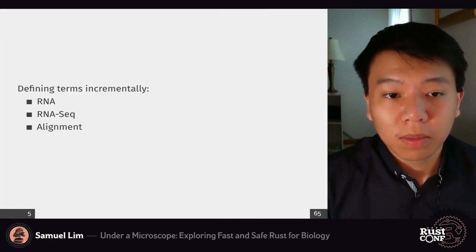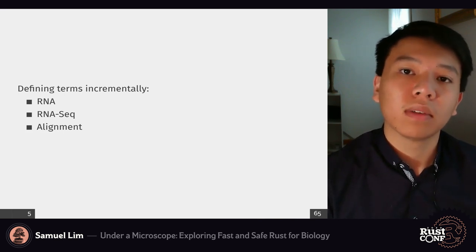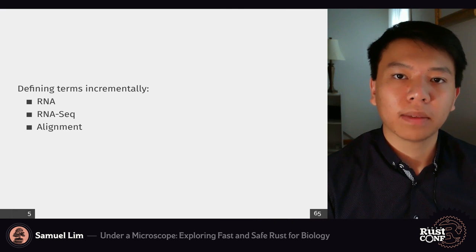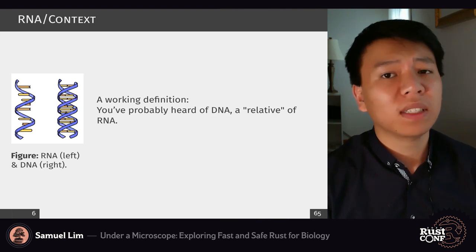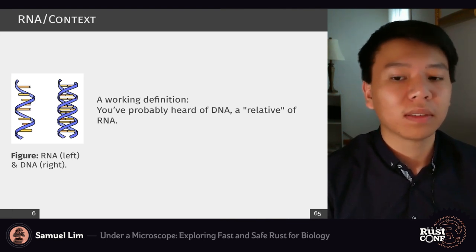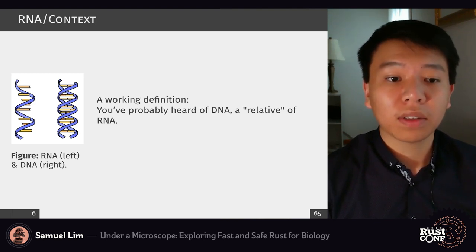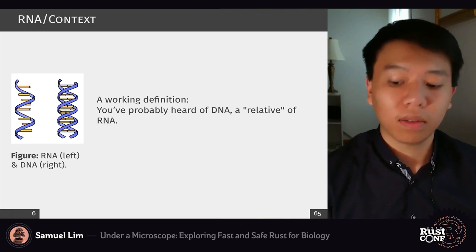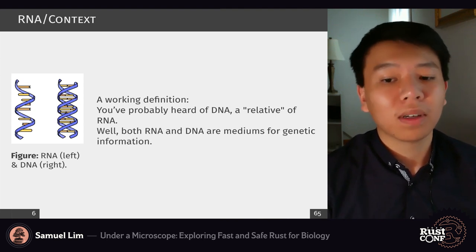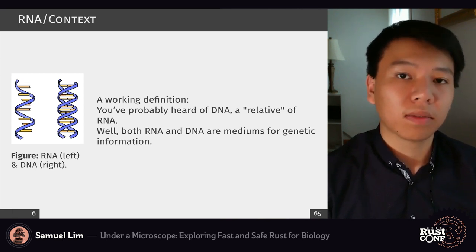There are quite a few different terms, so we'll define them incrementally. We'll start from RNA and then we'll see why sequencing is important and talk a little bit about alignment along the way. As a working definition: you've probably heard of DNA first. Both RNA and DNA are mediums for genetic information, although they come in slightly different forms.